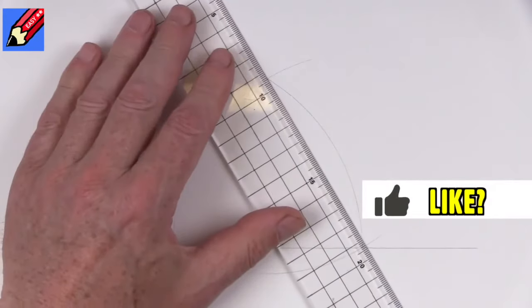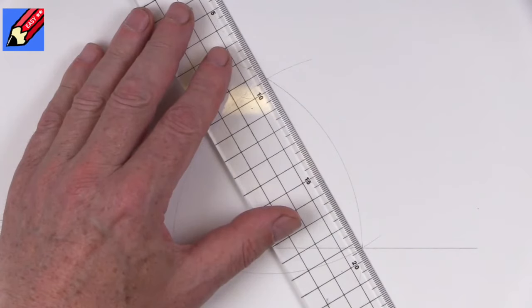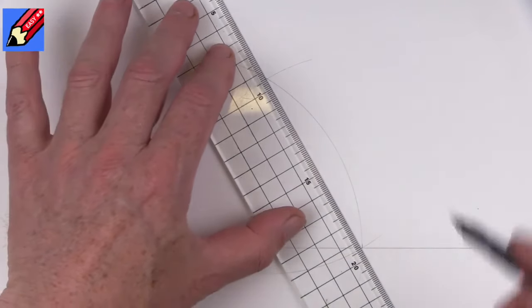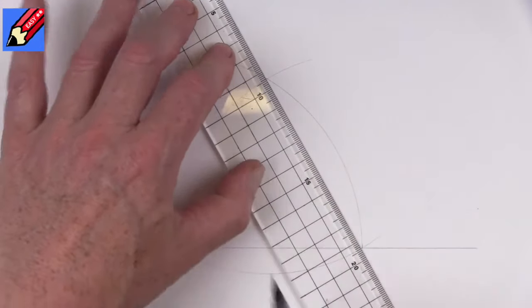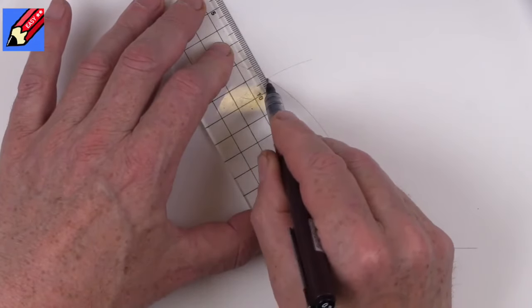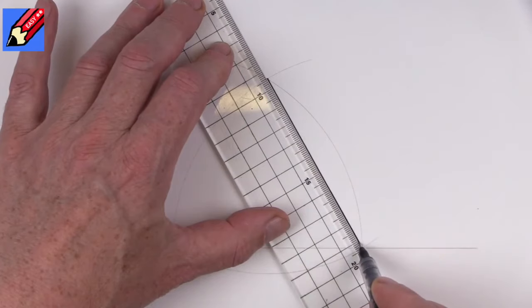Now we can ink this in by getting the ruler, and you want it just slightly to one side of those points. Don't draw into a ruler with ink, draw away from it, because otherwise the ink will bleed in underneath the ruler and it won't look terribly nice. So you should have kind of a tiny little gap.